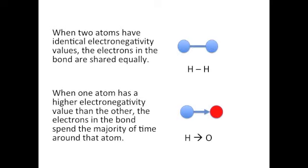When two atoms have identical or nearly identical electronegativity values, then the electrons in the bond that joins them are shared equally. There's a uniform electron distribution between the two atoms, and we call this a nonpolar bond.